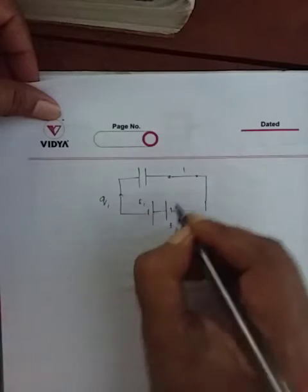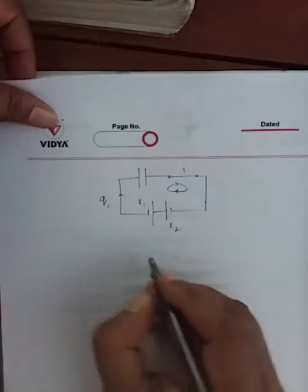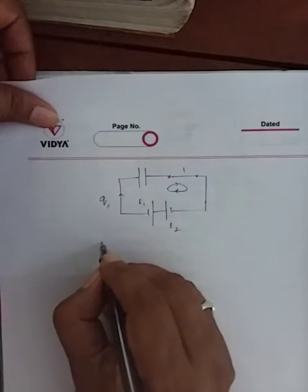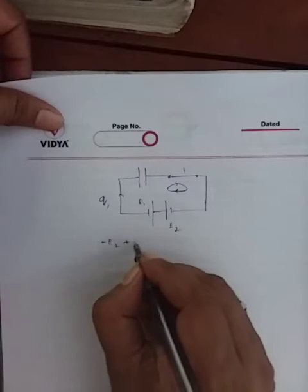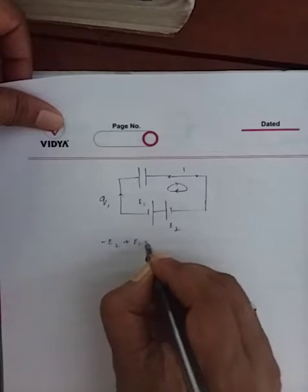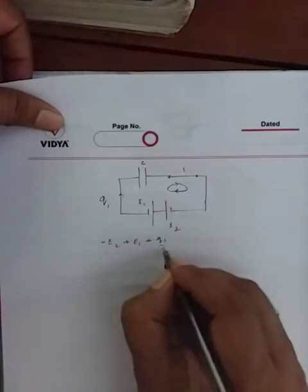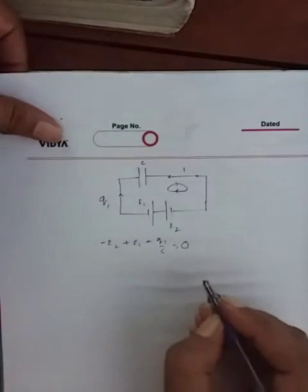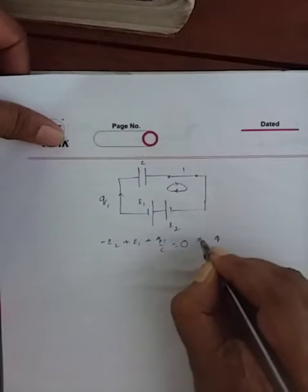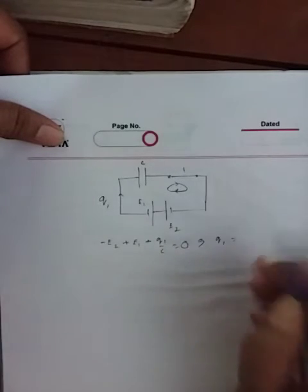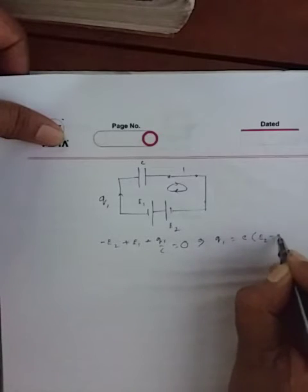The batteries are connected like this — this is E1 and this is E2. Suppose the charge is Q1. Applying Kirchhoff's loop: minus E2 plus E1 plus Q1/C equals 0. Solving this, I get Q1 equals C times (E2 minus E1).